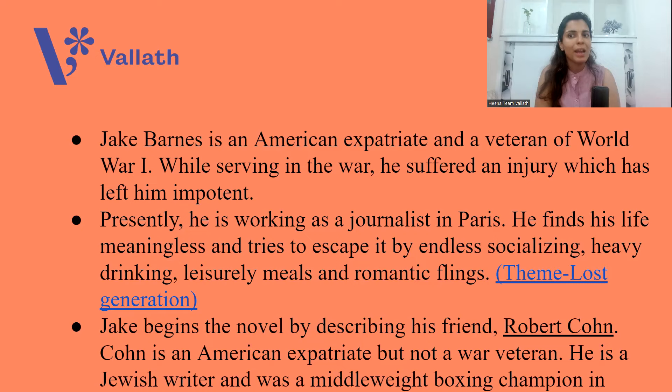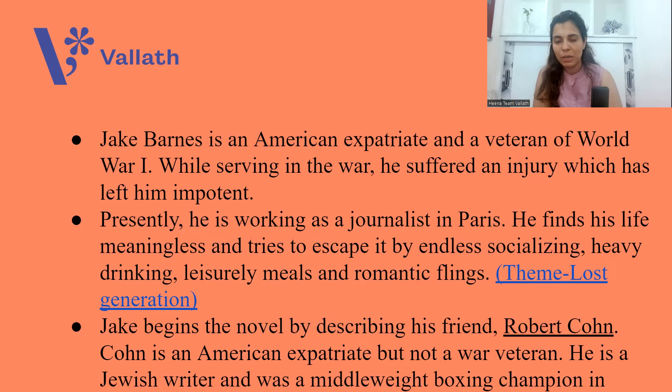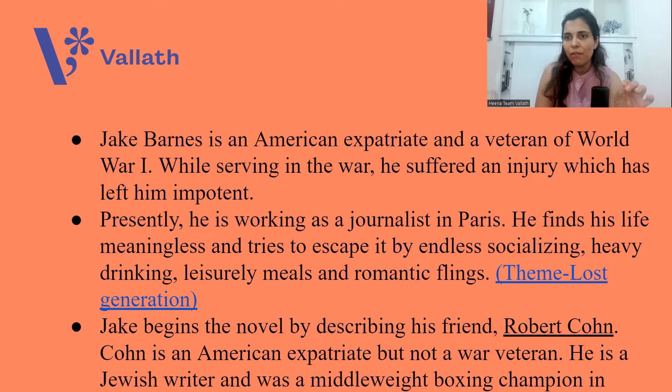The theme is lost generation — this is actually what the lost generation was all about, not being able to be stable. Jake begins the novel by describing his friend Robert Cohn, who is also an American expatriate, but he's not a war veteran. In fact, he will be the only male character from this group of friends who is not a war veteran.